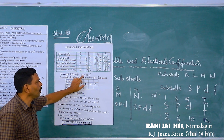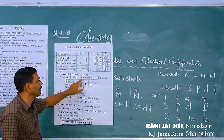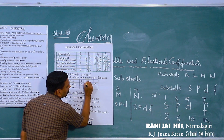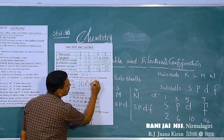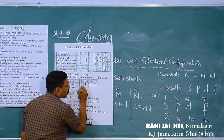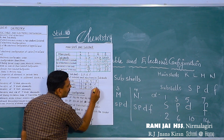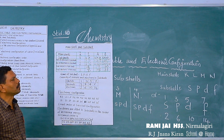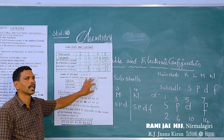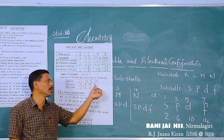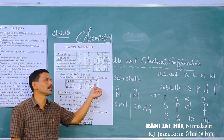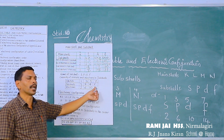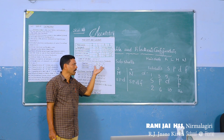Now children, remember the names of sub-shells: S, P, D, F. The capacity of orbitals in sub-shells: 1, 3, 5, 7. The number of electrons: 2, 6, 10, 14. That is very important. For the SLC exam — a sample question: what is the maximum capacity of electrons in the F sub-shell? Answer: 14.